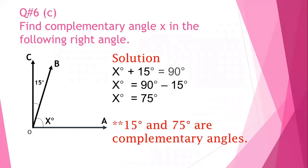The next question: find the complementary angle X in the given right angle. Angle AOV is X degrees, which is unknown, and angle BOC is 15 degrees. We write X plus 15 equals 90 degrees. Taking X on one side and shifting 15 to the other side with a negative sign, we get X equals 75 degrees. So 15 degrees and 75 degrees are complementary angles.